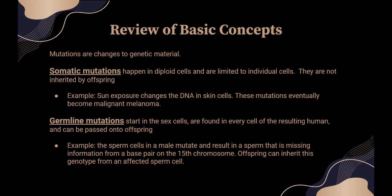Mutation is a change to genetic material. I want you to understand the difference between somatic and germline. Somatic mutations are not inheritable. They happen in your non-sex cells — your skin cells, your bone cells, your lung cells. They're limited to individual cells. So there are changes to the DNA in a cell that are not inherited by offspring, although they can cause disease in the individual where they occur.